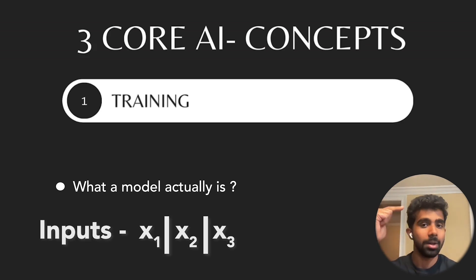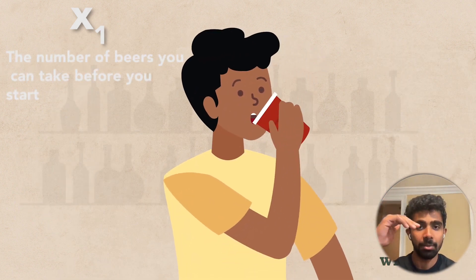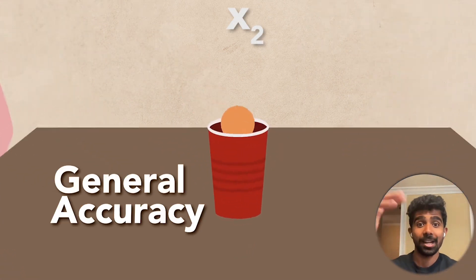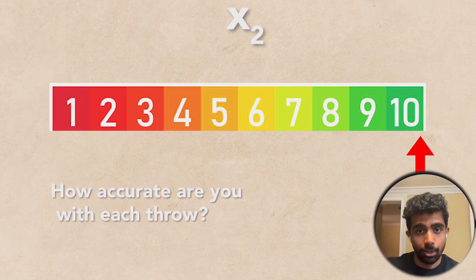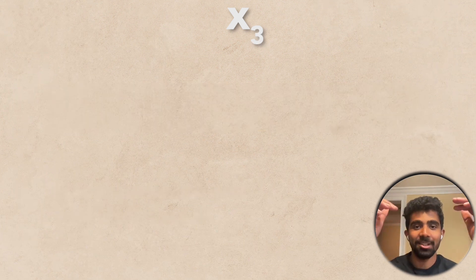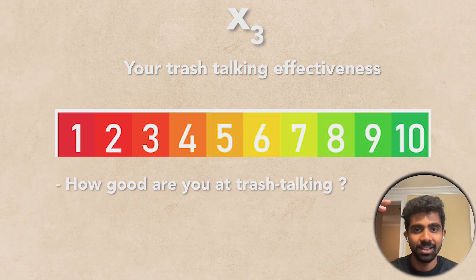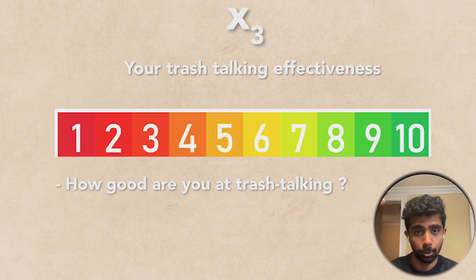The accuracy is going to be predicted based on three inputs: X1, X2, and X3. Let's say X1 is your alcohol tolerance, the number of beers you can take before you start slurring your words. X2 is your general accuracy, a number on a scale of one to 10 that represents how accurate you are with each throw. And X3 is your trash talking effectiveness, another number on a scale of one to 10 that represents how good you are at trash talking. Since obviously that will affect, you can get in your opponent's head, it'll overall affect how good you are at the game, your chance of winning.